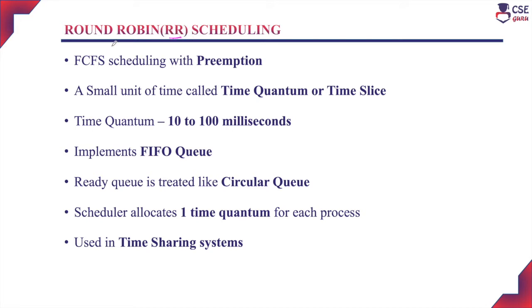This RR algorithm is similar to the FCFS Scheduling Algorithm, but FCFS is a non-preemptive scheduling algorithm, whereas the Round-Robin Scheduling Algorithm is a preemptive scheduling algorithm. So the RR scheduling algorithm can be called preemptive FCFS, or FCFS scheduling algorithm with preemption.